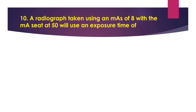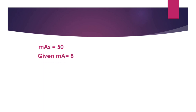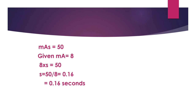Question number 10: A radiograph taken using an mA of 8 with an mAs set at 50 will use an exposure time of - Option A - 0.58 second. Option B - 0.32 second. Option C - 0.16 second. Option D - 0.62 second. The answer is Option C - 0.16 second. Since mAs = 50 and mA = 8, exposure time = 50 ÷ 8 = 0.16 seconds. With that, I am winding up today's session. Hope today's session is clear.